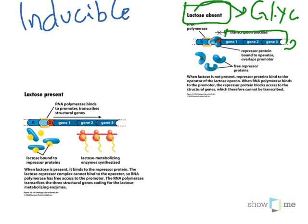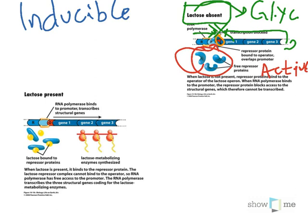The repressor protein exists in this free state, which would also be considered the active state of the repressor protein. The reason it's considered active is because it can bind here to the operator region. And when RNA polymerase tries to begin transcription, it bumps into the repressor protein and stops. You can see the big X there — there is no transcription, so the genes are not expressed and there is no protein made.